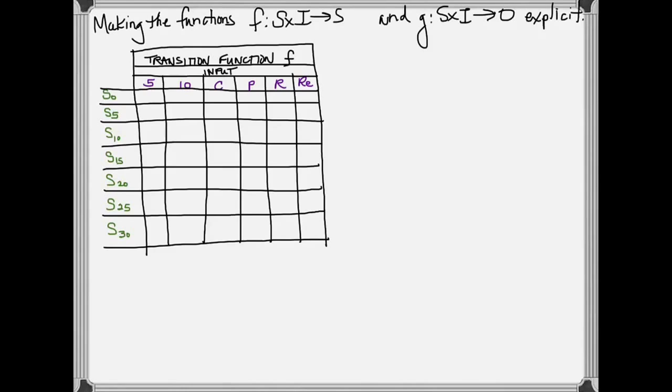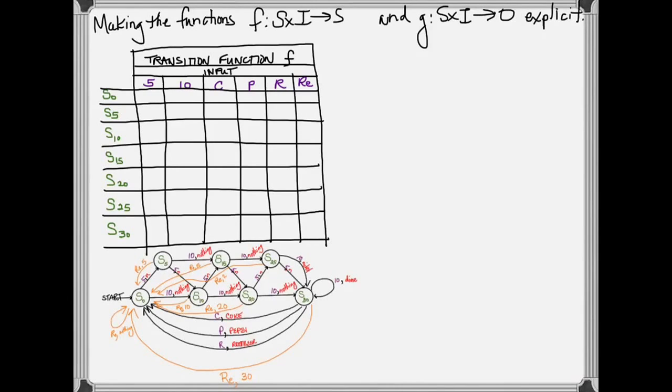For a transition function, you're going to need to have all your states listed and all your possible inputs. Here again, R is root beer, RE is return. Let me pull the image back.